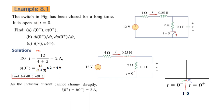Since inductor current cannot change instantaneously, i(0+) equals i(0-), which is 2 amperes. Similarly, since capacitor voltage cannot change instantaneously, v(0+) equals v(0-), which is 4 volts.